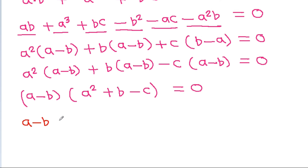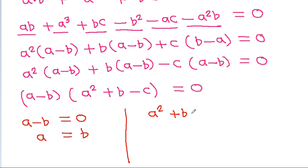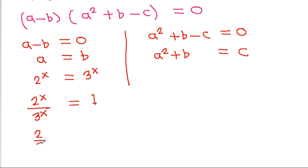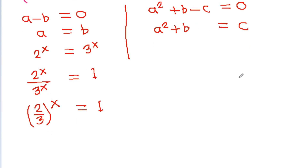Taking (a minus b) as a common factor gives (a minus b)(a^2 plus b minus c) equals 0. Either a minus b equals 0, meaning a equals b, i.e., 2^x equals 3^x, so 2^x divided by 3^x equals 1, which gives x equals 0.